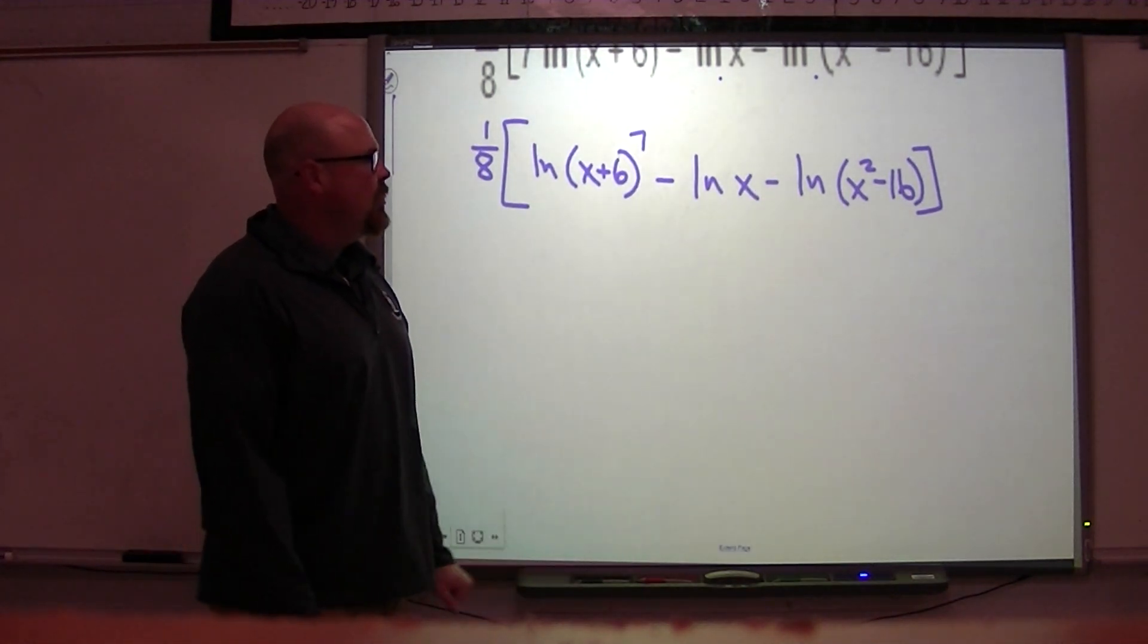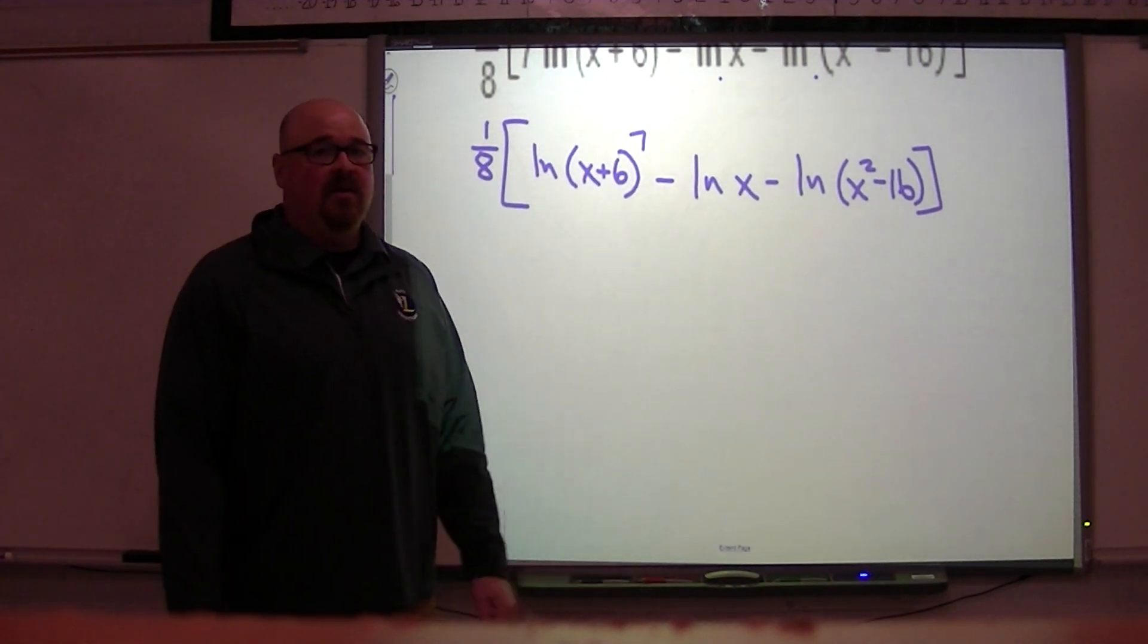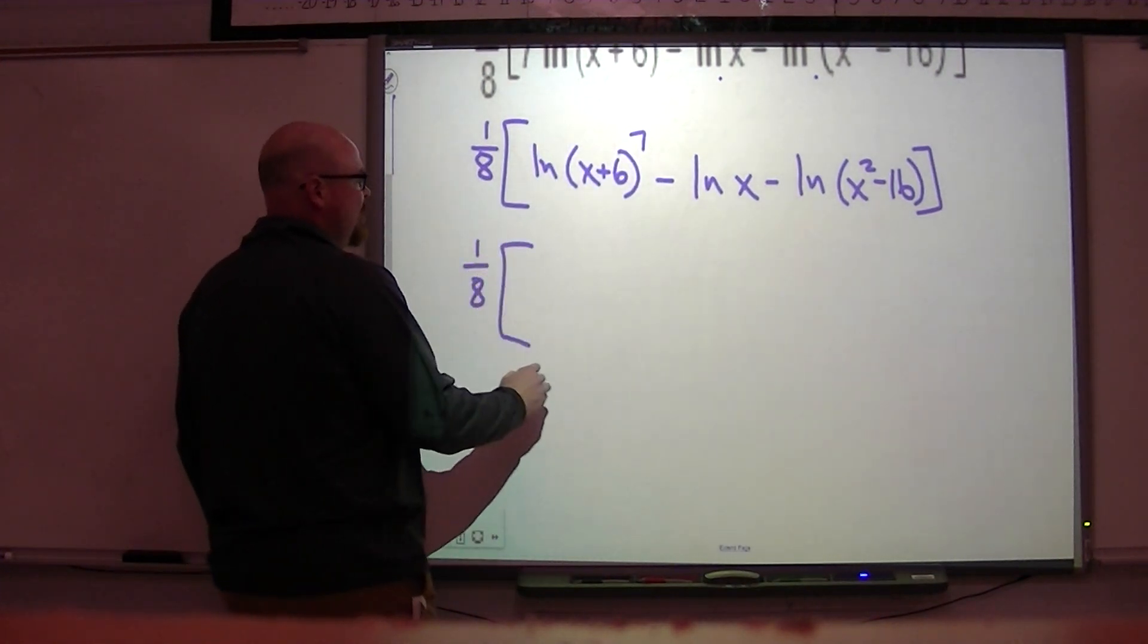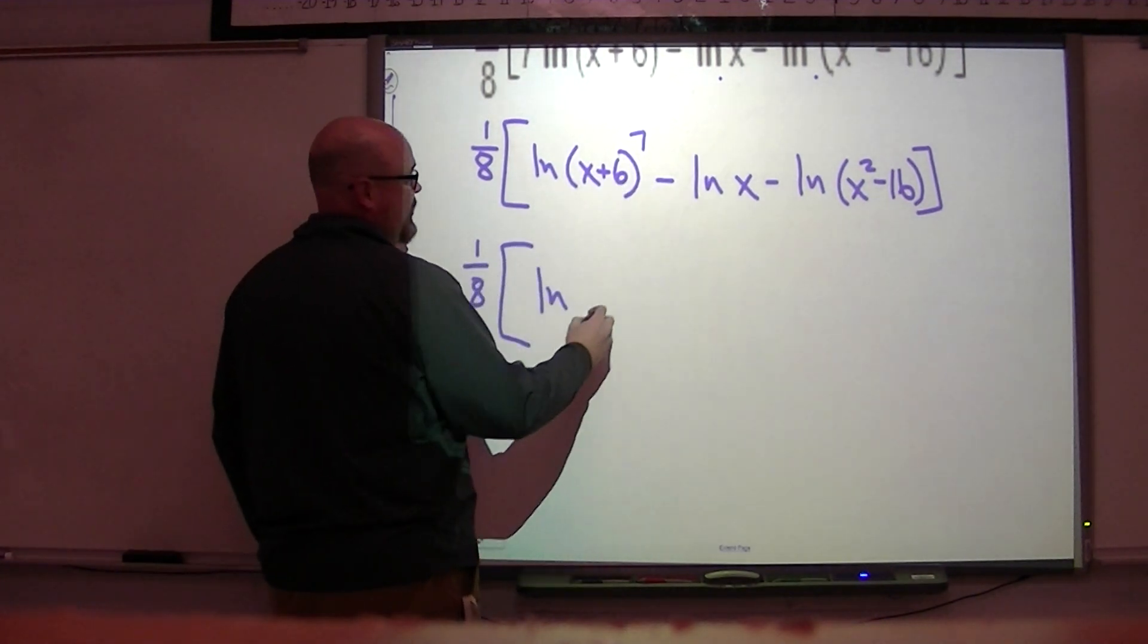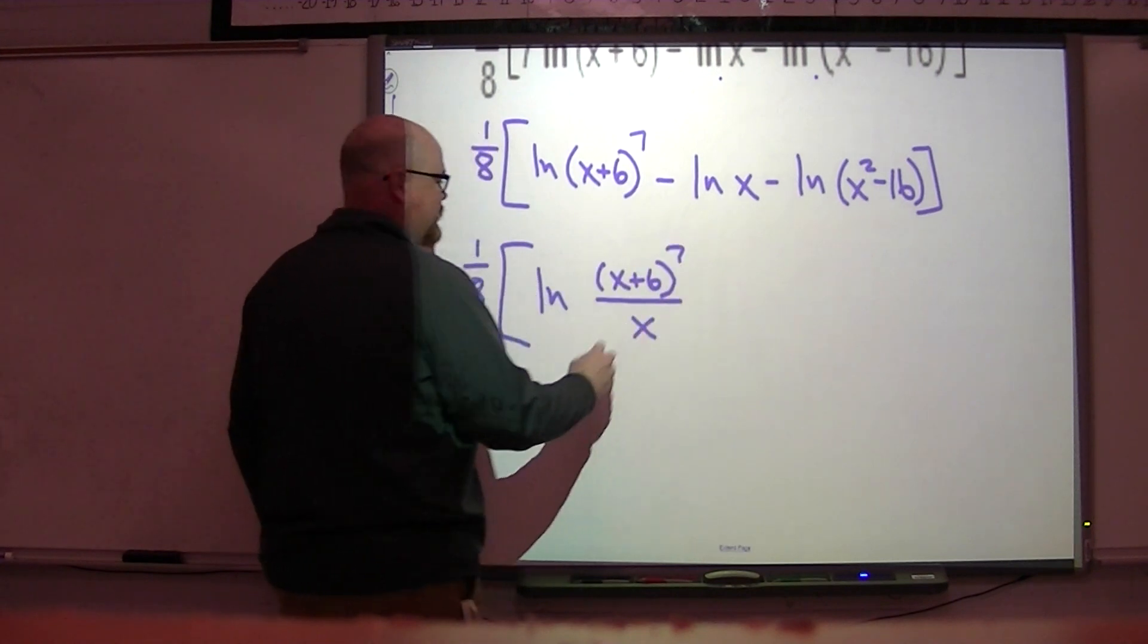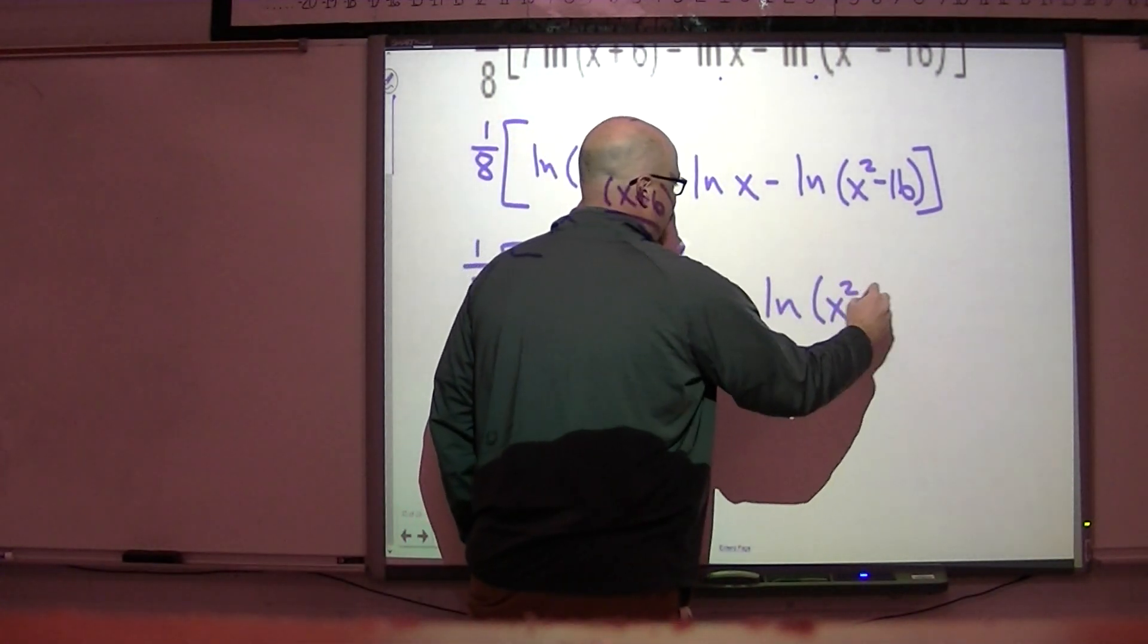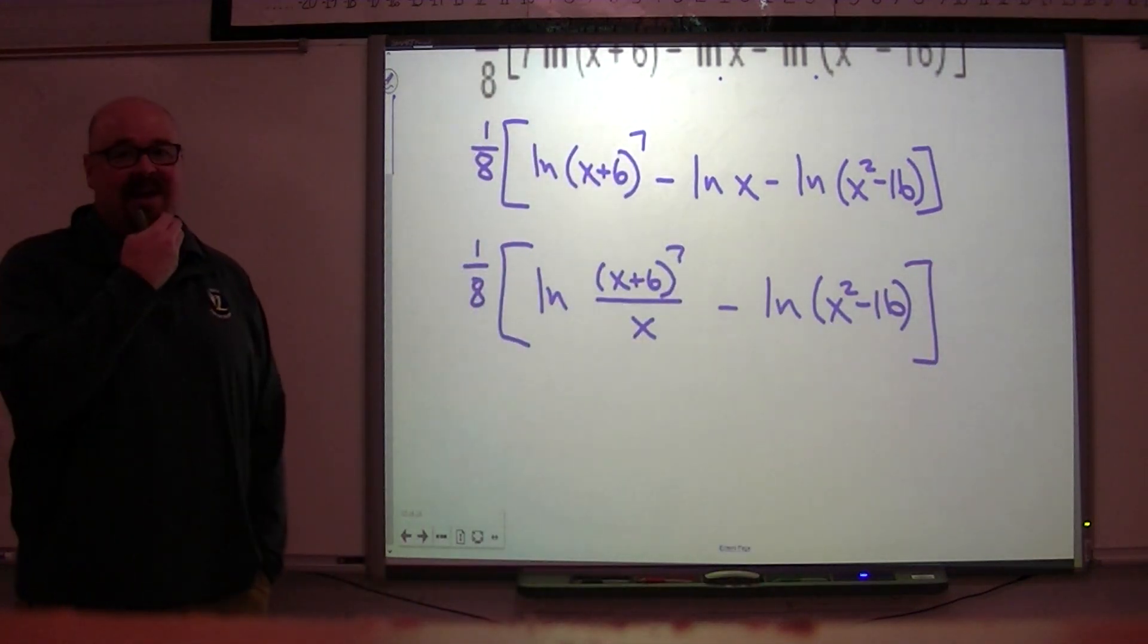Again, a couple of different approaches what we can do with this but the best approach is probably just to work left to right. So what do we talk about with the difference of two logs? The difference of two logs is one logarithm. When I want to condense them, the difference of two logs can become the log of a quotient or a fraction. So I'm sliding this x underneath here, writing that as one log. I haven't done anything with this.